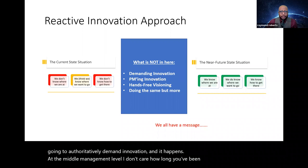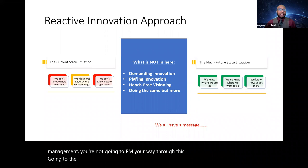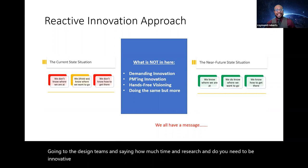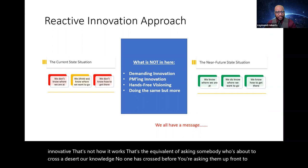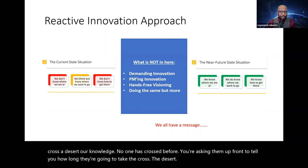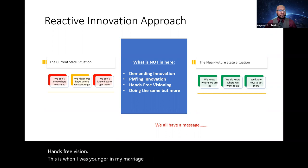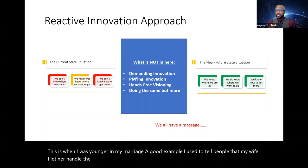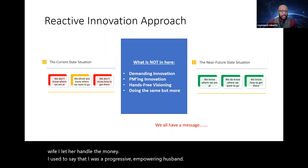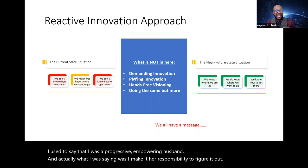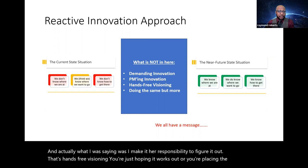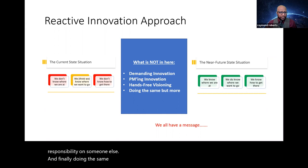At the middle management level, I don't care how long you've been doing project management, you're not going to PM your way through this. Going to the design teams and saying, how much time and research do you need to be innovative? That's not how it works. That's the equivalent of asking somebody who's about to cross a desert that to our knowledge, no one has crossed before. You're asking them up front to tell you how long they're going to take to cross the desert. Hands-free vision. This is when I was younger in my marriage, a good example. I used to tell people that, you know, my wife, I let her handle the money. I used to say that like I was a progressive, empowering husband. In actuality, what I was saying was I make it her responsibility to figure it out. That's hands-free vision. You're just hoping it works out or you're placing the full responsibility on someone else. And finally, doing the same thing, but more.